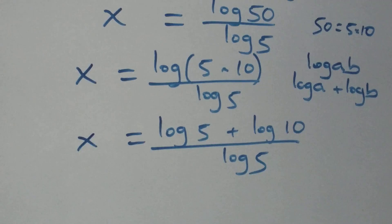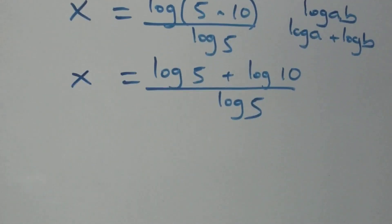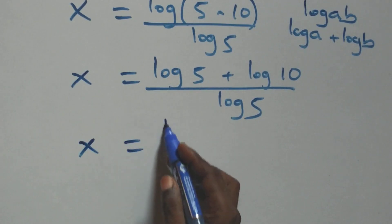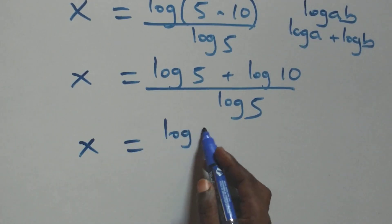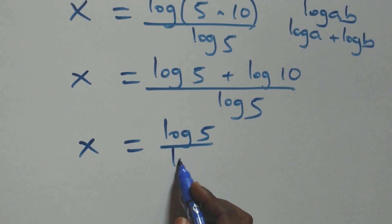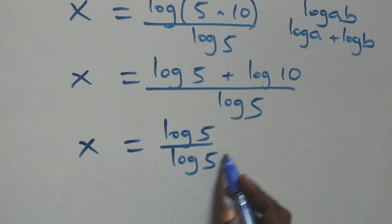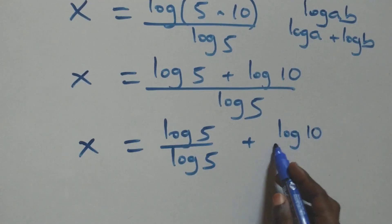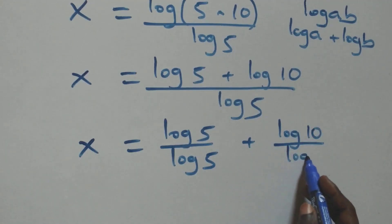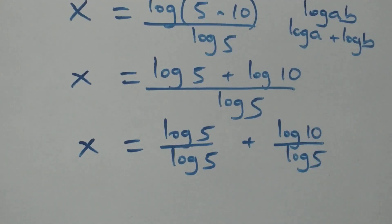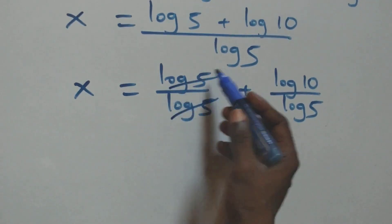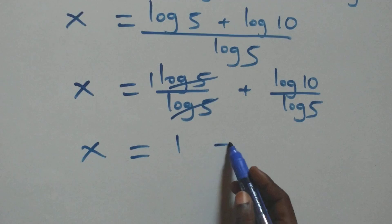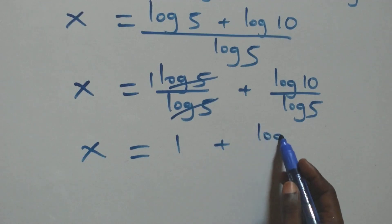We separate this into two fractions: x = log(5)/log(5) + log(10)/log(5). Log(5) cancels in the first fraction, leaving 1, so x = 1 + log(10)/log(5).